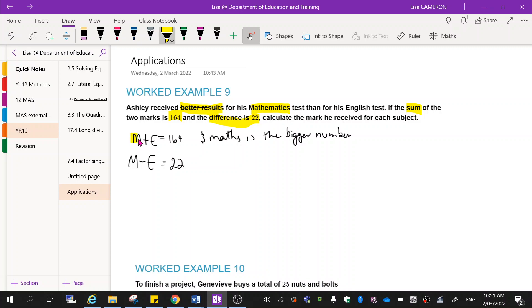We're going to get this top equation in the form of m equals. So if I do that, equation one is equal to m plus e equals 164. I'm going to move the e across by subtracting it because it's currently positive. So it's going to become m is equal to 164 minus e.